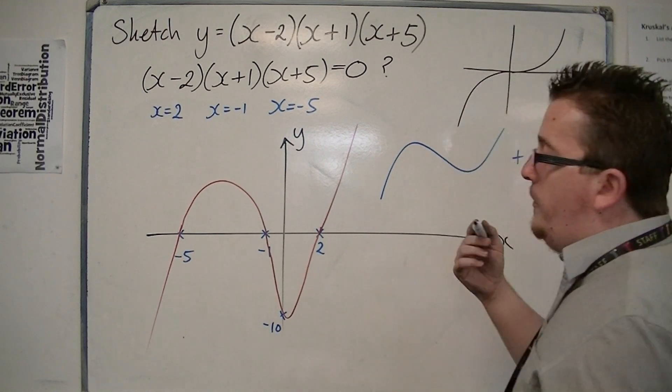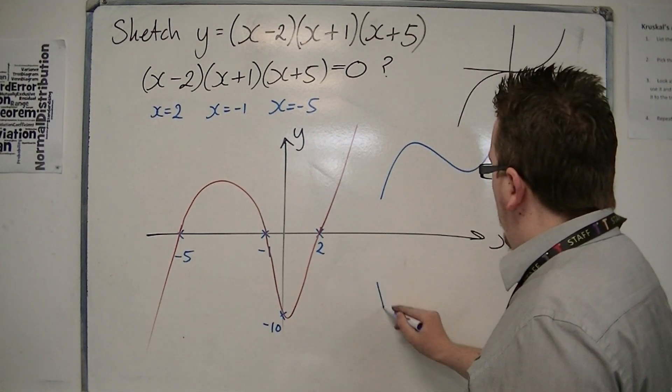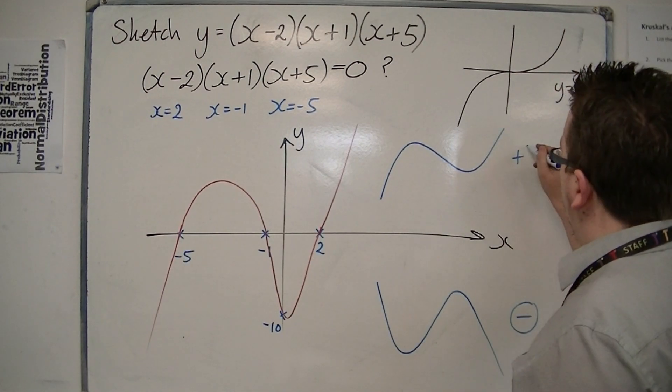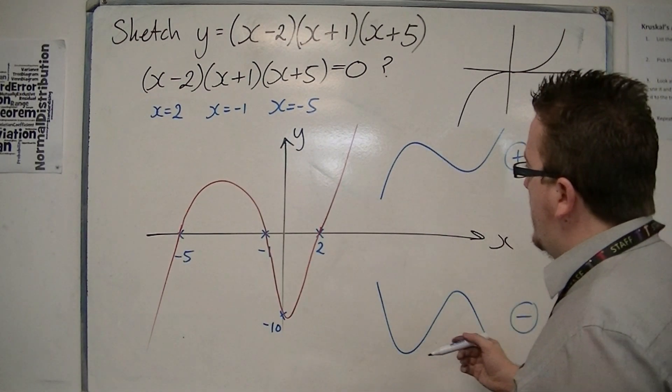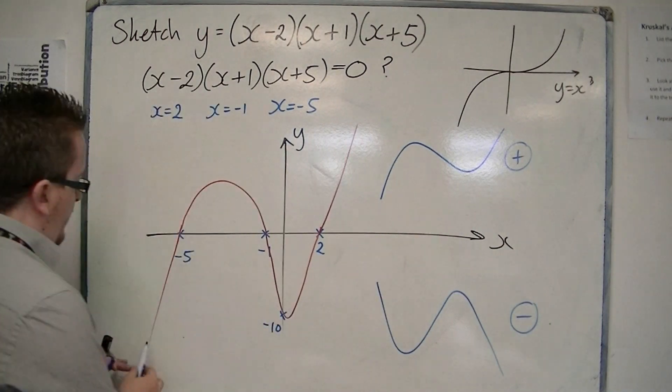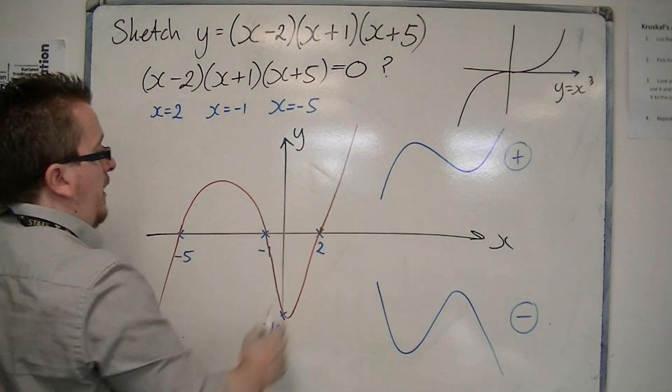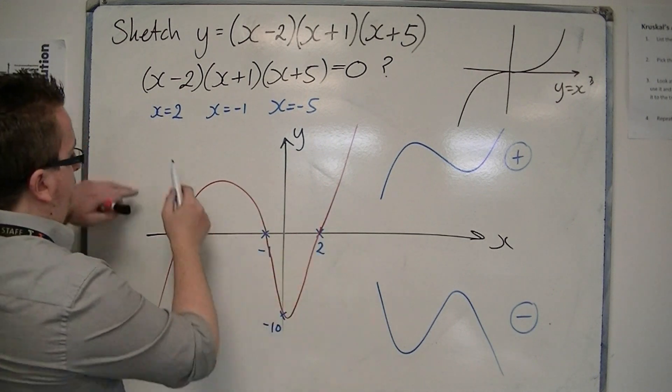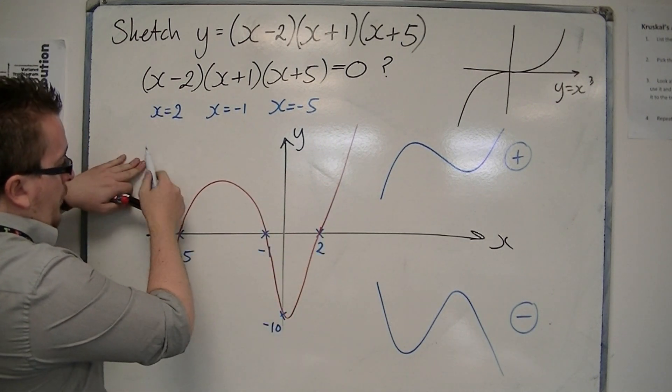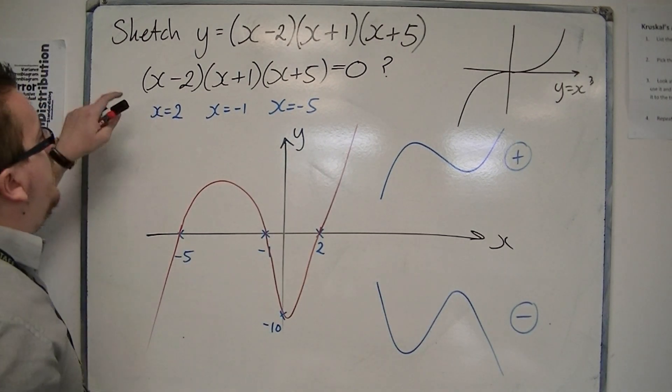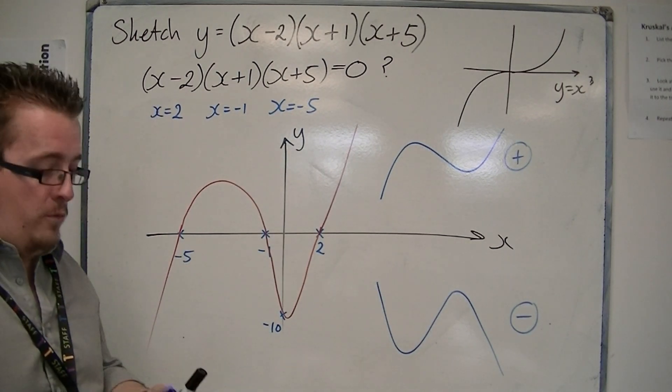But if it's negative, instead, it looks like this. So there's a positive and a negative. Positive starting from the bottom left, and through the three points. And if it was negative, we'd start at the top left, and through the three points. And that's to do with the number in front of the x cubed.